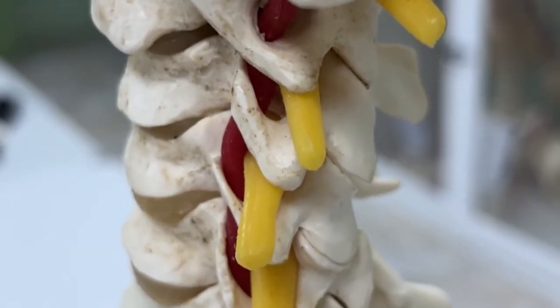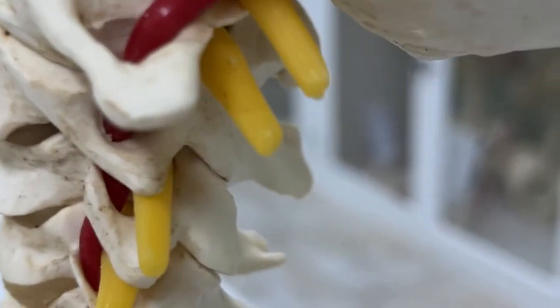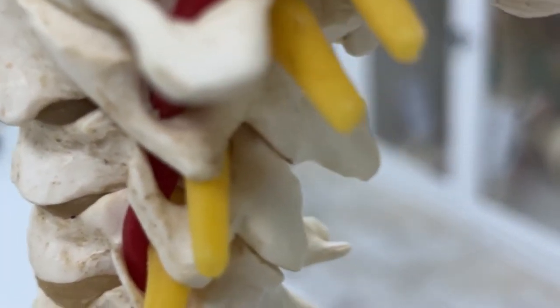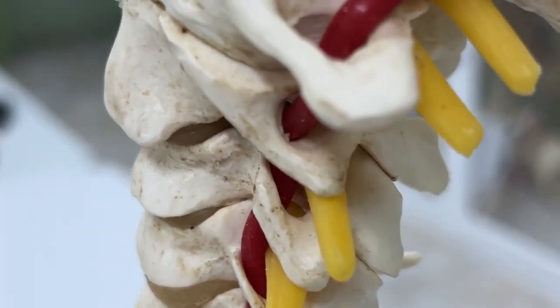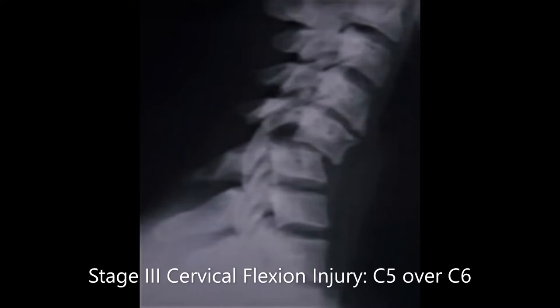Stage 4 is up to 100% translation — the entire vertebral body has moved completely away from the vertebra below — and it is also associated with facet jumping. These are the stages of cervical flexion spine injury. This is a lateral X-ray of a cervical spine for a patient with stage 3 flexion injury; you will find that the C5 cervical vertebra has translated approximately 33% over C6, confirming a stage 3 cervical flexion spine injury.